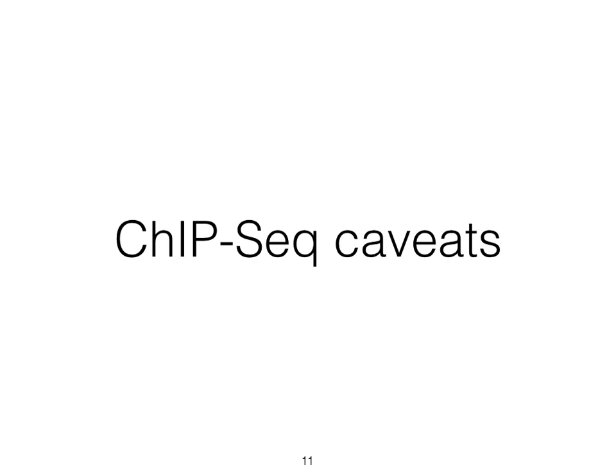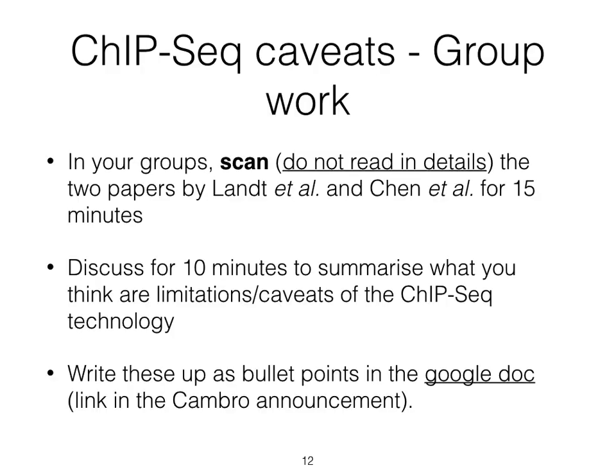We know now why ChIP-seq is a method of choice to study epigenetics, and the protocol itself seems straightforward. But let's exercise our critical thinking and look out for what caveats there may be. In your groups, scan the two papers made available in CAMRO — as these two papers document guidelines for performing and analysing a ChIP-seq experiment — scan for the paragraph headers. Do this for 15 minutes, then take 10 extra minutes to summarize what you think are caveats of the technology and write them as bullet points in the Google Doc.